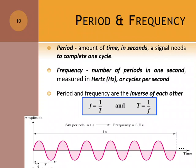It's written as T for period. This is one period, from here to here is one period. This one is also one period.